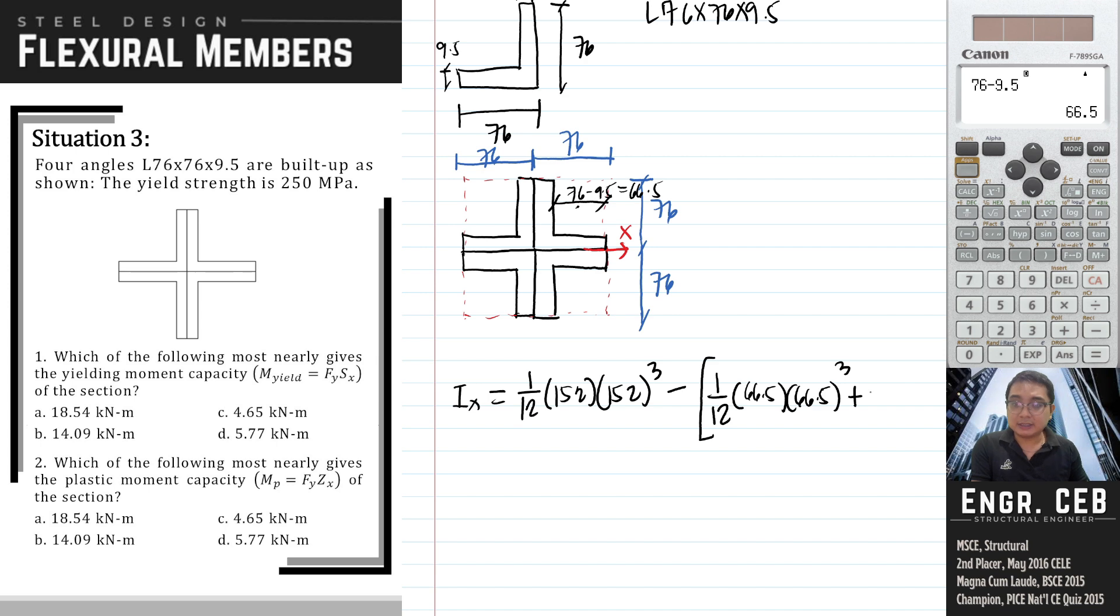We need to add plus area d squared. The area of the square hole is 66.5 squared. The distance of the centroid towards the x-axis is simply equal to 66.5 over 2 plus the thickness. That is 42.75, squared.